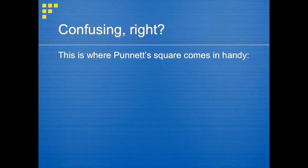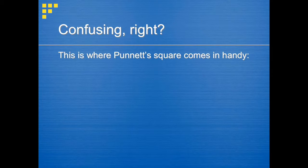That's where Punnett squares come in handy. Before we can use the Punnett square, we have to write the parent's genotypes. A genotype is represented by two letters, and each letter represents an allele. The letters may be capital or lowercase, depending on whether an allele is dominant or recessive. Capital letters denote a dominant allele, and lowercase letters denote a recessive allele.